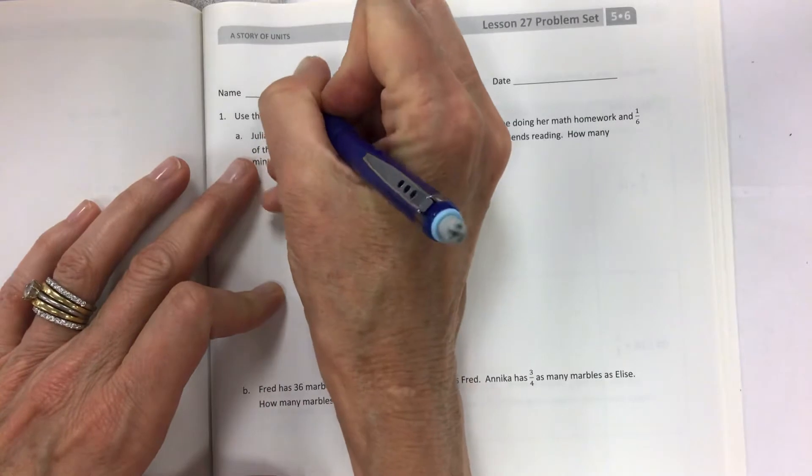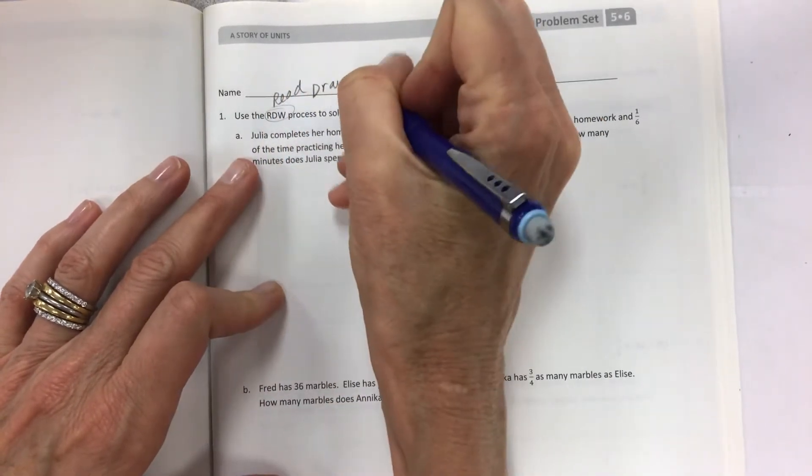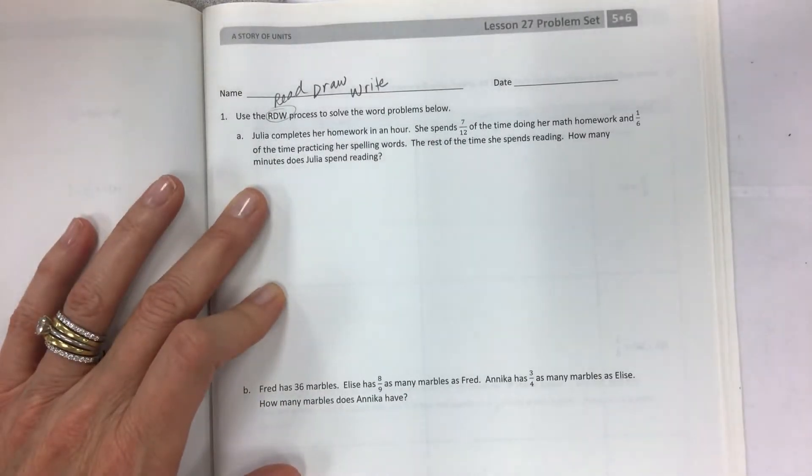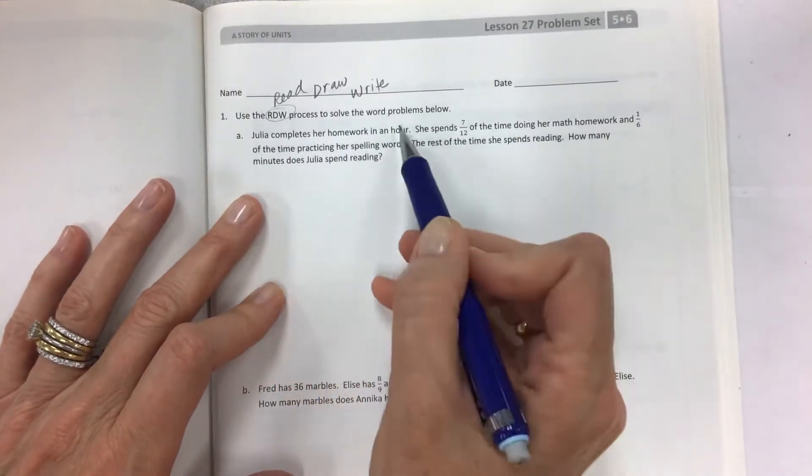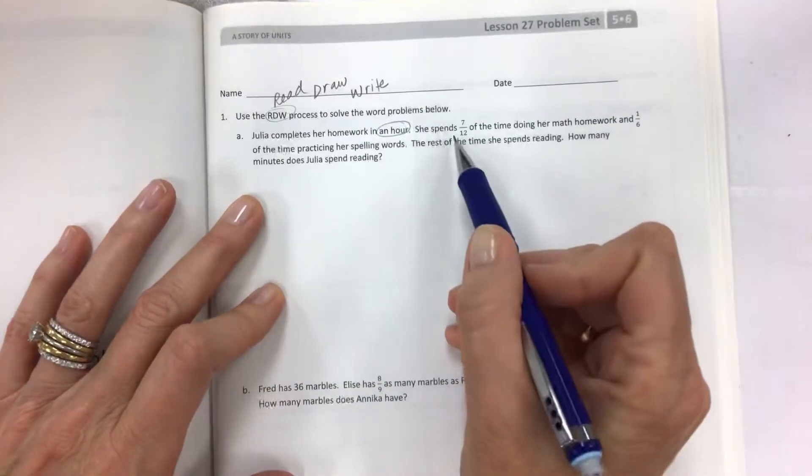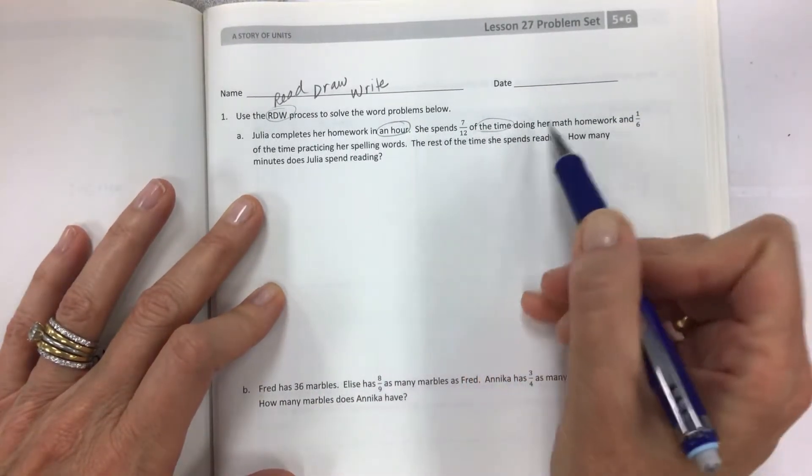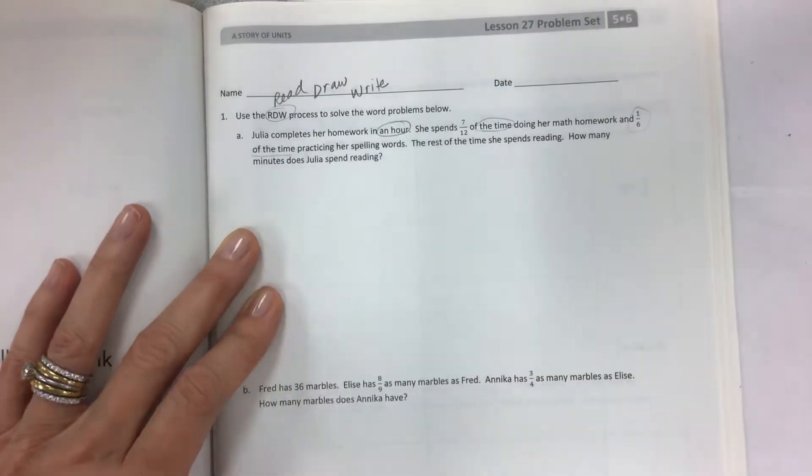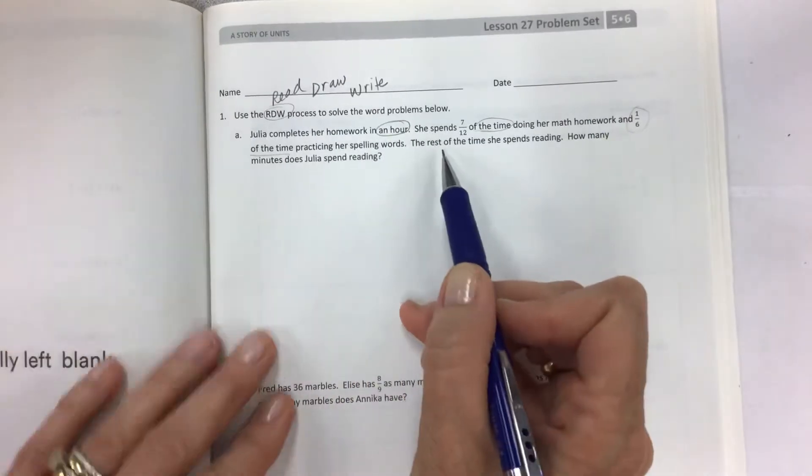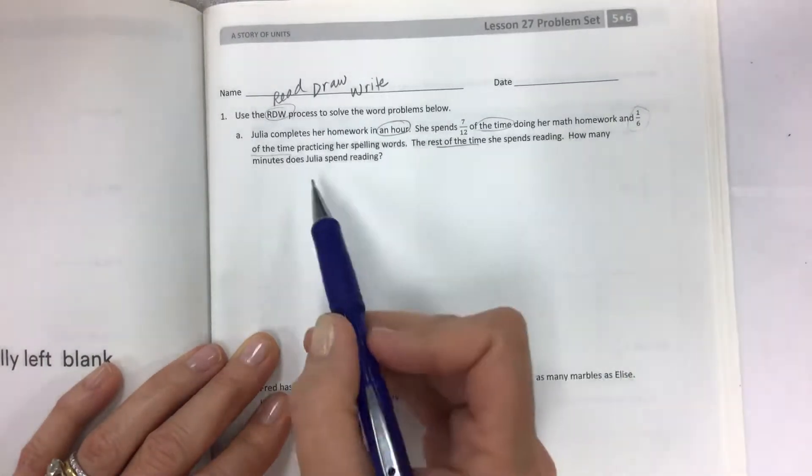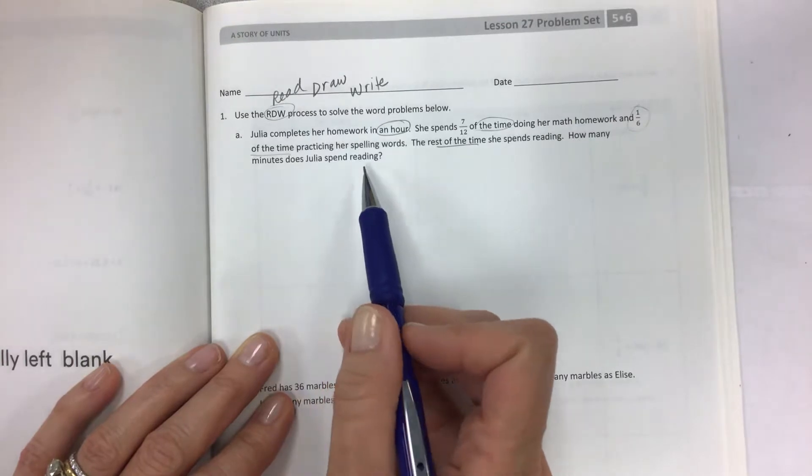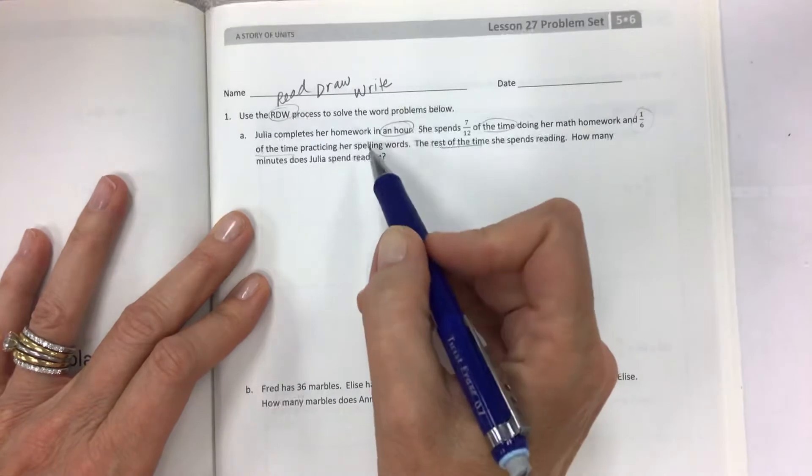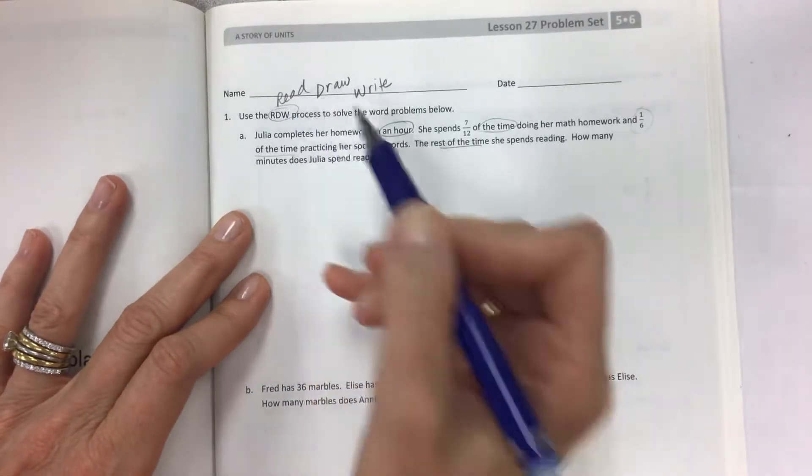Use the RDW process to solve the word problems below. By now you should know that RDW is not a TV show or a character on Arthur - it is actually Read, Draw, Write. So we're going to read it, draw something, then write something out in your answer and explain your thinking. Julia completes her homework in an hour. She spends seven twelfths of the time doing her math homework and one sixth of the time practicing her spelling words. The rest of the time she spends reading. How many minutes does Julia spend reading?